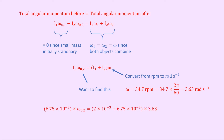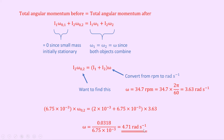Substituting in what we know: 6.75 times 10 to the minus 3 times omega02 equals 2 times 10 to the minus 3 plus 6.75 times 10 to the minus 3, times 3.63 radians per second. The right-hand side gives 0.0318, so omega02 equals 0.0318 divided by 6.75 times 10 to the minus 3, which equals 4.71 radians per second.